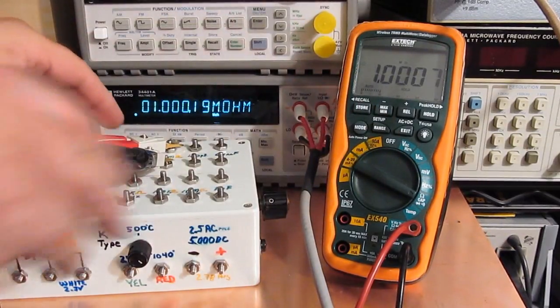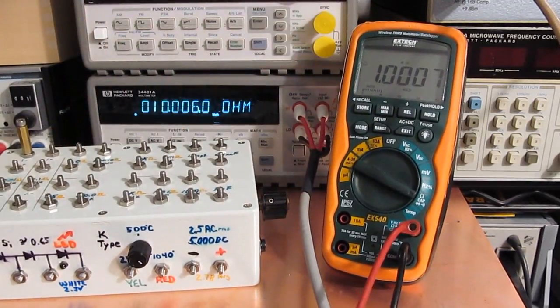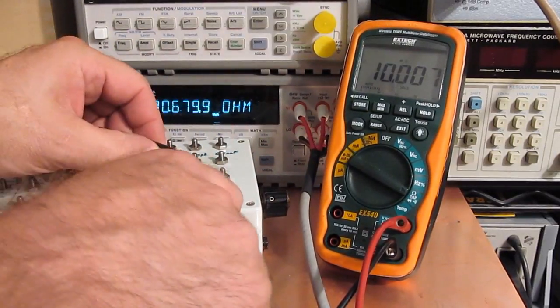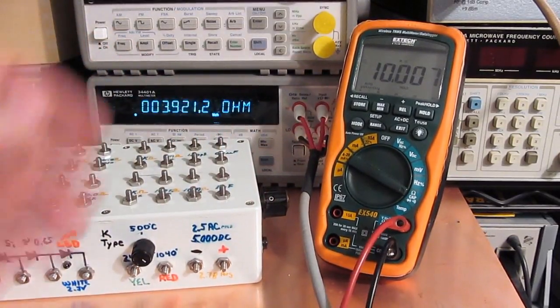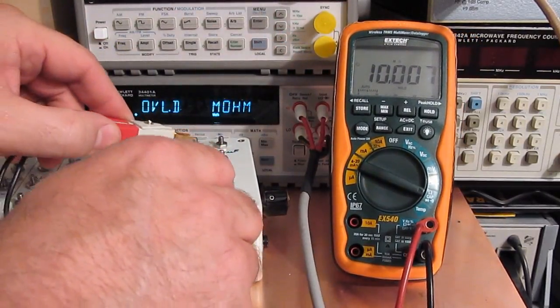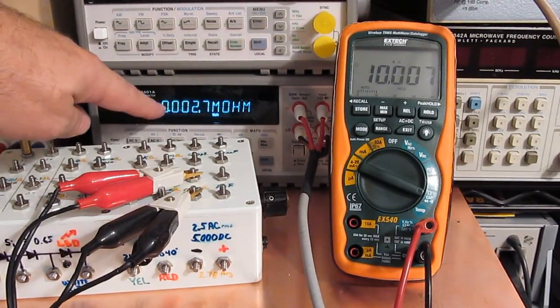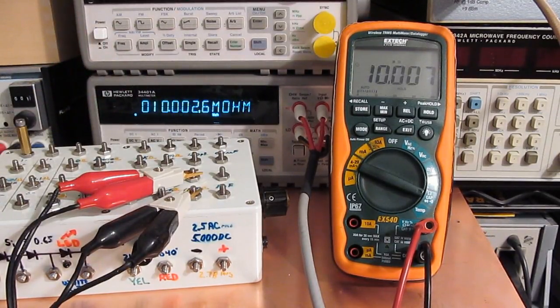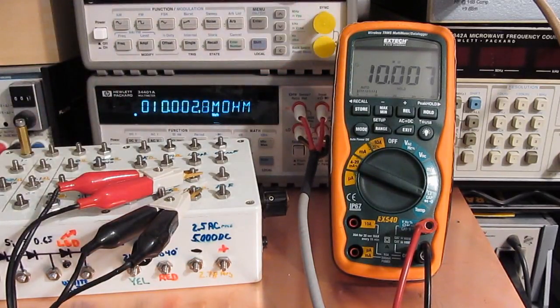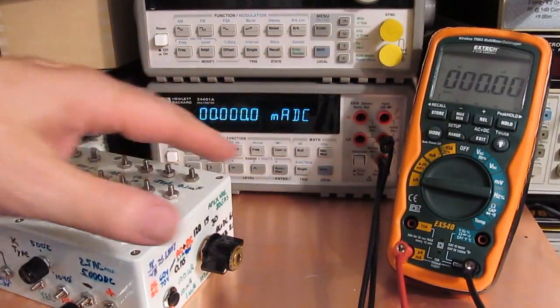This is with a 10 megohm resistor. A little bit better there. We are 10.0026 on the HP versus 10.007 for the XTAC. All right, so I placed both meters in series.